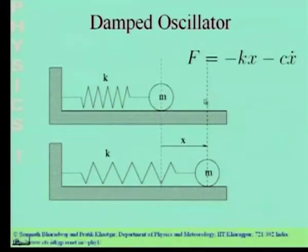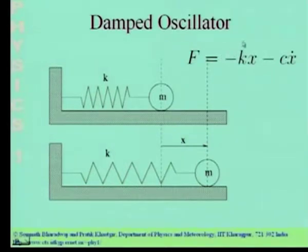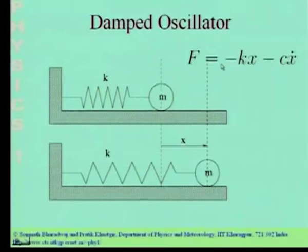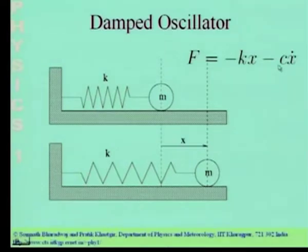When you displace the particle and leave it, you have two forces acting on the mass. The first force arises due to the spring — the spring constant times the displacement with a minus sign, so it opposes the displacement. Additionally, you have a force proportional to the velocity; this is the damping force, which is the main difference when you consider a damped oscillator.